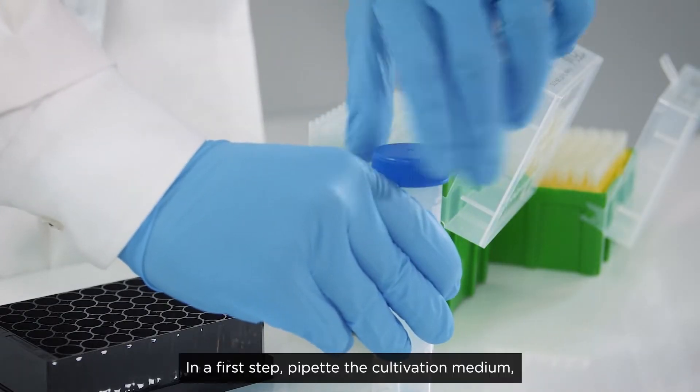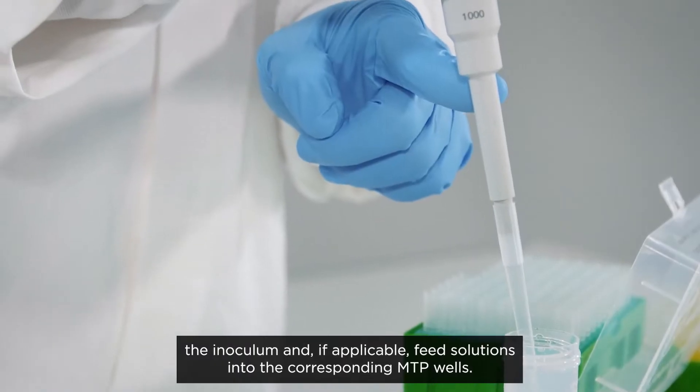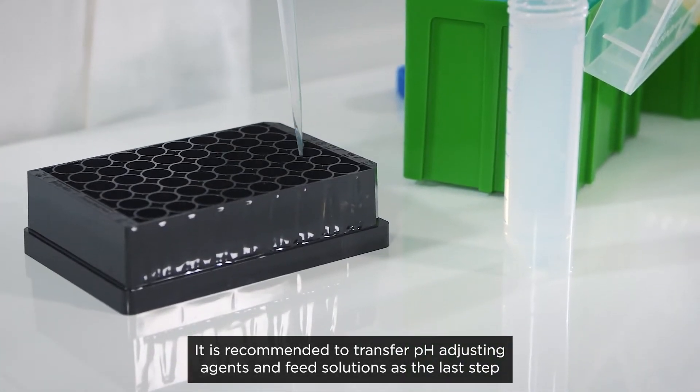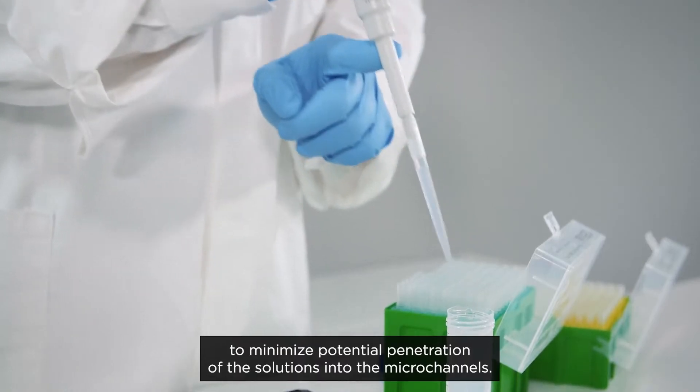In a first step, pipette the cultivation medium, the inoculum, and if applicable, feed solutions into the corresponding MTP wells. It is recommended to transfer pH adjusting agents and feed solutions as the last step to minimize potential penetration of the solutions into the microchannels.